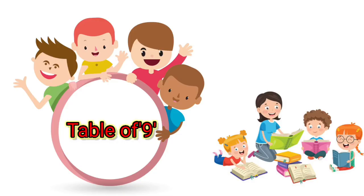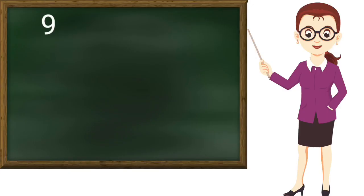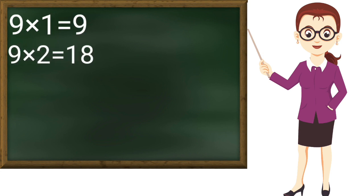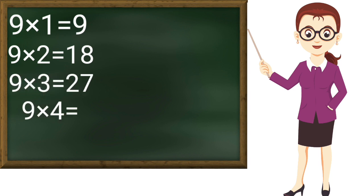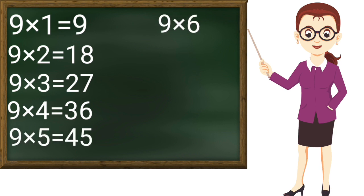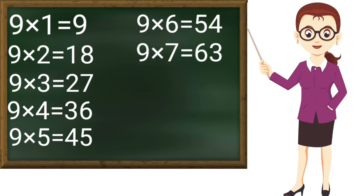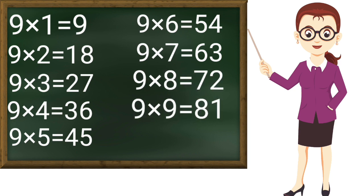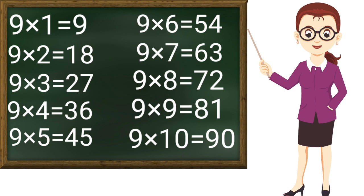Now table of 9: 9 ones are 9, 9 twos are 18, 9 threes are 27, 9 fours are 36, 9 fives are 45, 9 sixes are 54, 9 sevens are 63, 9 eights are 72, 9 nines are 81, 9 tens are 90. Thank you teacher.